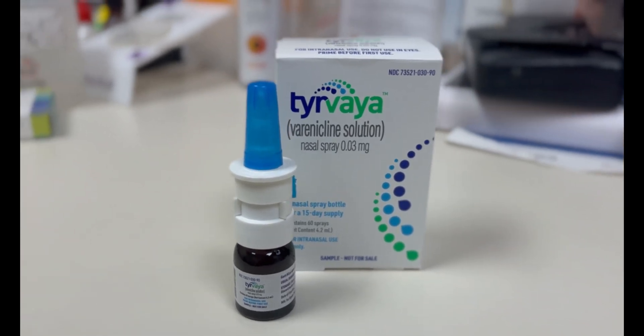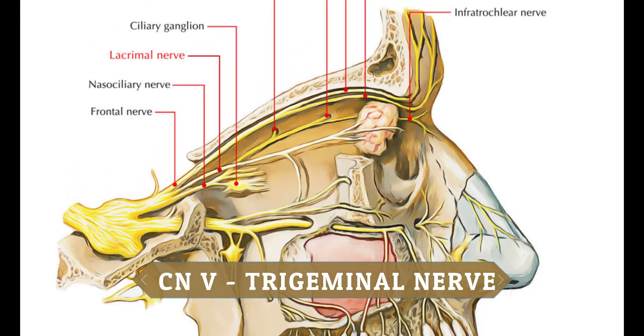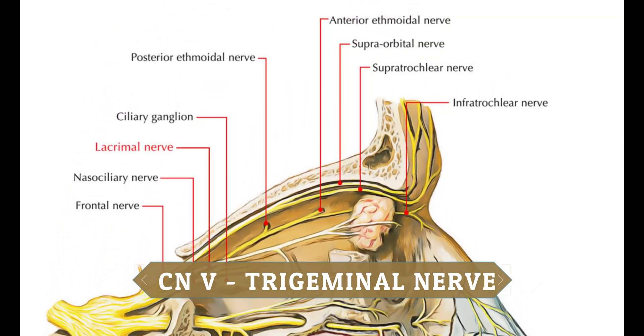A newer agent designed to increase tear volume is a prescription called Tyrvaya, which is varenicline. Varenicline is also found in Chantix, an oral medicine used for smoking cessation, but varenicline has been shown to improve the activity of the fifth cranial nerve — the nerve that stimulates tear production. When the eye becomes dry, the fifth nerve activates and tells the lacrimal gland to produce tears as a reflex, and this drug helps stimulate that function. It's a nasal spray dosed twice a day on the outside of the nostril, and it works pretty well for some patients.